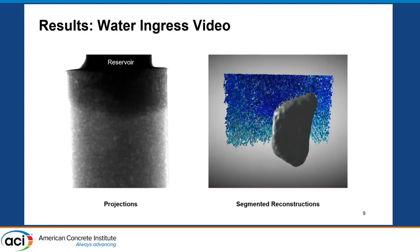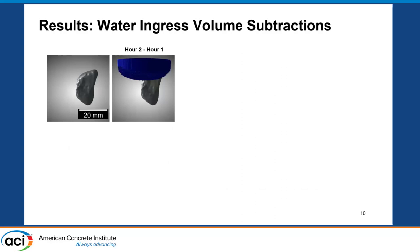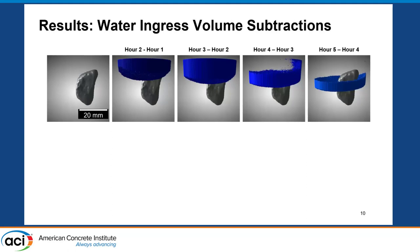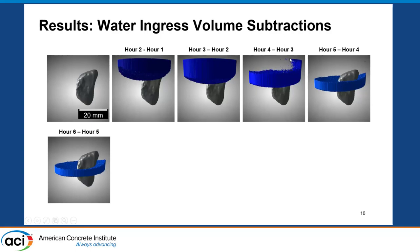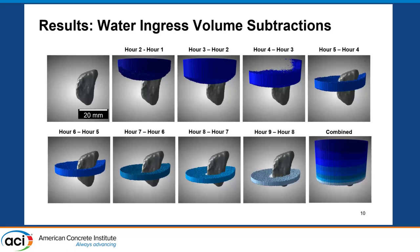I took hour two reconstruction and subtracted hour one, so what's left represents what change occurred between the two scans — representative of the water that moved into a region between that scan and the next. Again, we see really just incremental movement. There is a bit of residual movement up on the corner, which I think is just because the aggregate is slightly off-centered. Around hour seven to eight, we do see a small gap, which basically means there was no change there. If water had made it there, it would have been captured at this resolution.